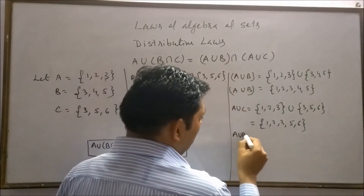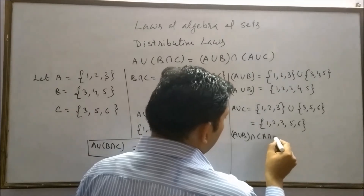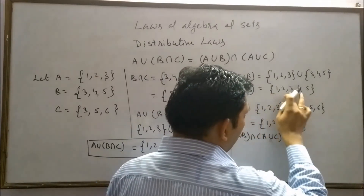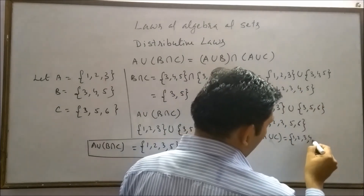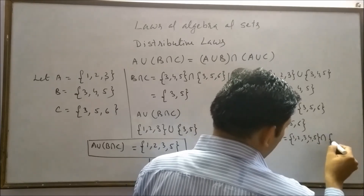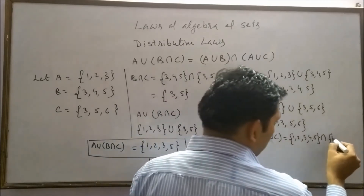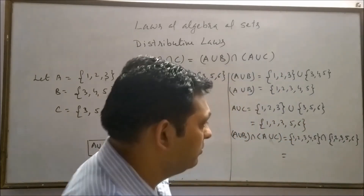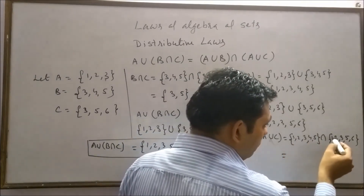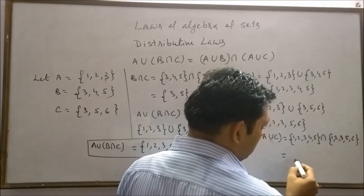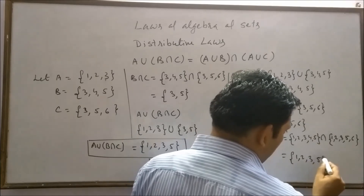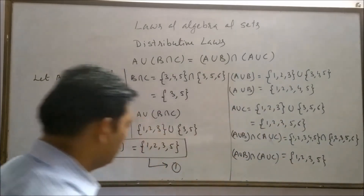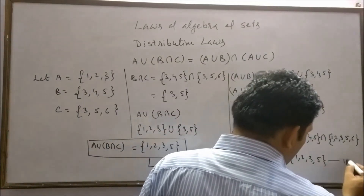Now take (A union B) intersection (A union C). A union B is {1, 2, 3, 4, 5} and A union C is {1, 2, 3, 5, 6}. Taking their intersection, the common elements are 1, 2, 3, and 5. So (A union B) intersection (A union C) = {1, 2, 3, 5}. This is our second result.